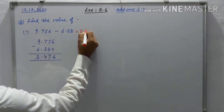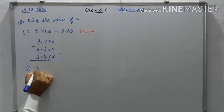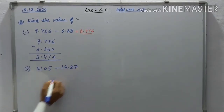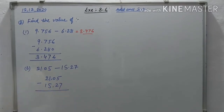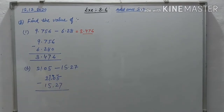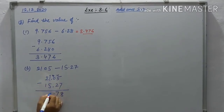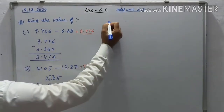Part (b): 21.05 minus 15.27. Write 21.05 and 15.27. 5 minus 7 — borrow — 15 minus 7 is 8, 9 minus 2 is 7, 10 minus 5 is 5 — the answer is 5.78.